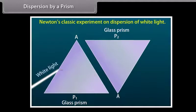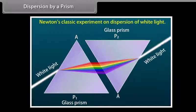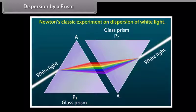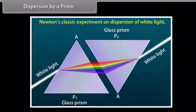Newton's classic experiment on dispersion of white light. Newton placed a second prism P2 inverted in front of prism P1. The emergent beam from P1 fell on P2, and the emergent beam from P2 was white light, demonstrating that dispersion is reversible.